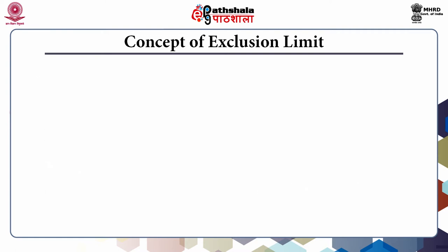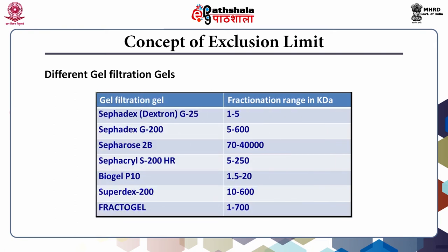Different gels have different exclusion limits. For example, Sephadex G25 has a fractionation range of 1 to 5 kDa, meaning molecules with molecular weight above 5 are excluded from entering inside the beads and easily pass between the beads, eluting out of the column very soon. This is one example of the concept of exclusion limit.